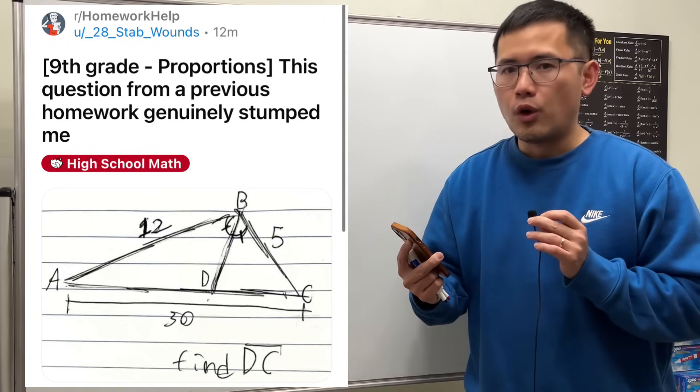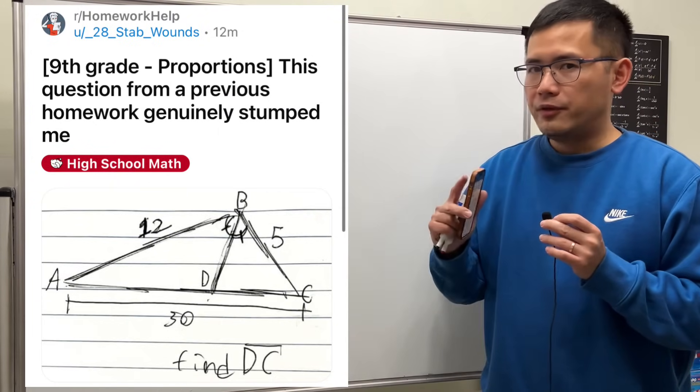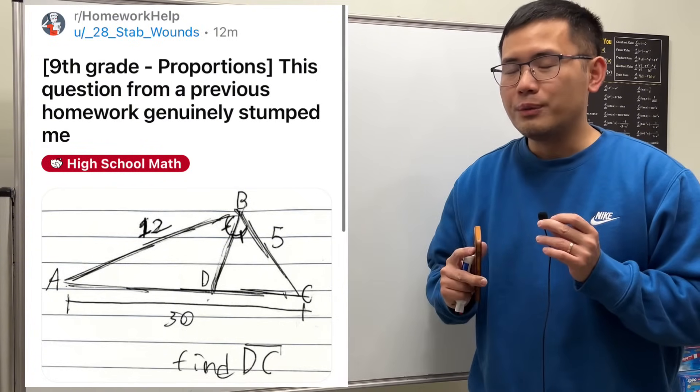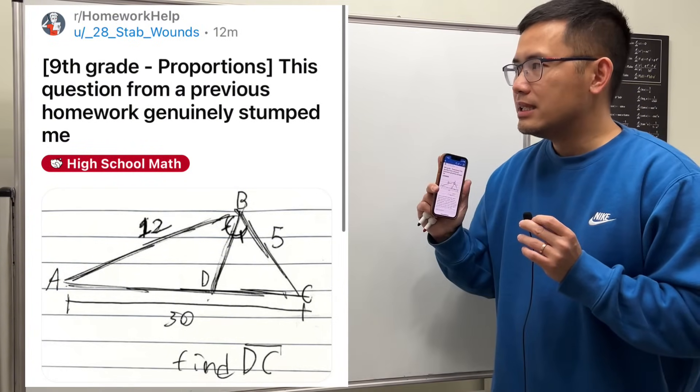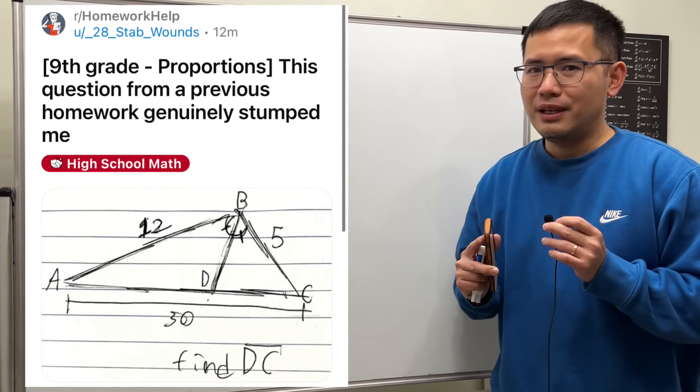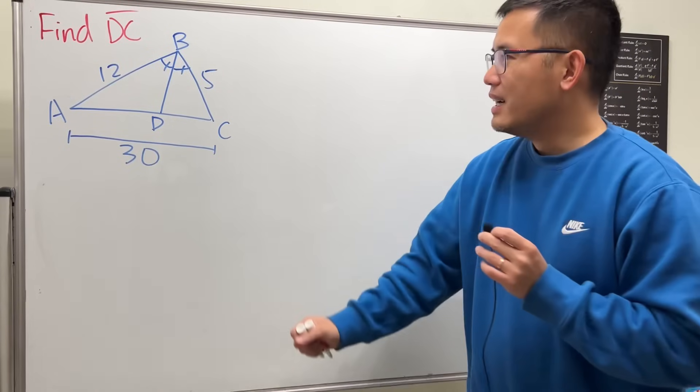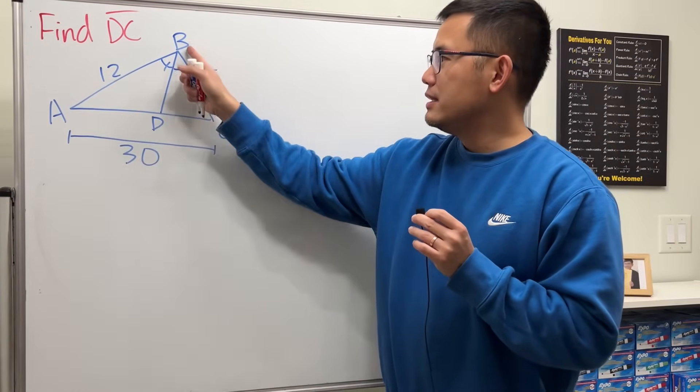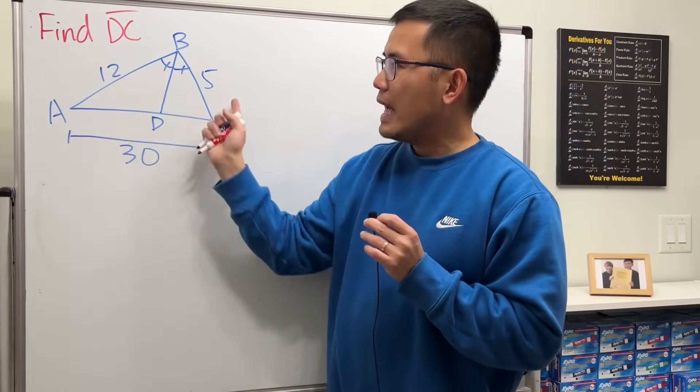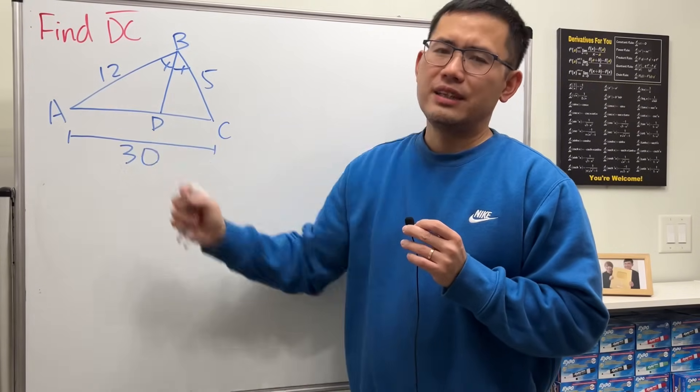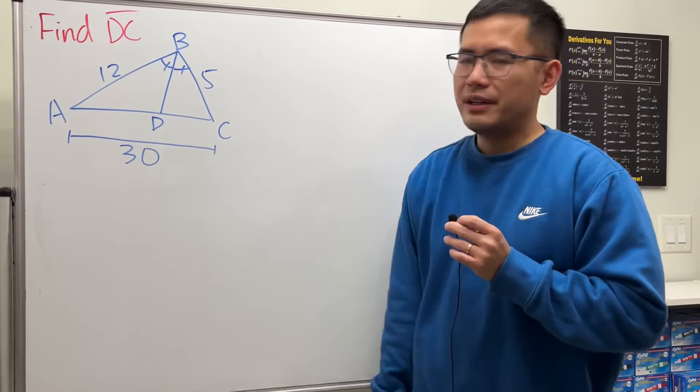And our goal is to find the length DC. But before we start with the angle bisector theorem, I have to tell you that this cannot be a triangle in the first place. Let me explain. Notice that sides 12 and 5, when they add up, we get 17. 17 is not bigger than 30.